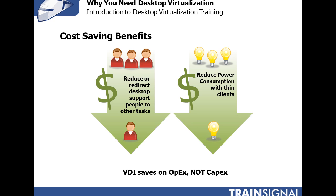What about the cost? With VDI, you can reduce or redirect desktop support people to other tasks, and you'll also reduce power consumption with thin client devices, making IT more efficient and saving on electricity. VDI saves on operational expenses, not capital expenses — it shouldn't cost more in hardware and software in the long term. The savings come from day-to-day operational expenses. In a later lesson, there are VDI return on investment and total cost of ownership calculators where you can input your IT support staffing, number of end-user devices, and current spending, and it will show you how much money you'll save over time by implementing desktop virtualization.